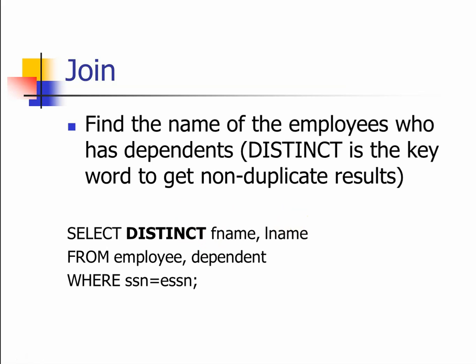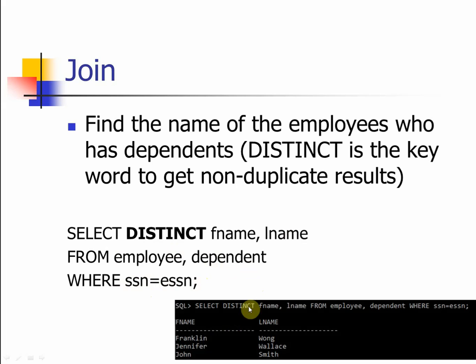DISTINCT will give you the full correctness of the database idea. So instead of just SELECT first name and last name, we say SELECT DISTINCT first name and last name FROM employee, dependent WHERE SSN equals ESSN. What you get is a result with no duplications, and usually we want to add that DISTINCT reserved word.